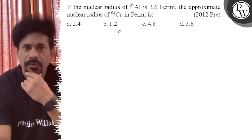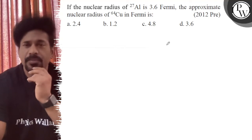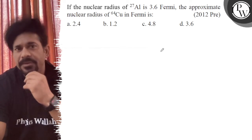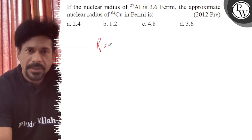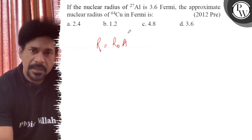Let's see the question: if the nuclear radius of aluminum-27 is 3.6 fermi, approximate the radius of copper-64 in fermi. So we know what the radius is - it's nothing but R₀A^(1/3), where A is the mass number.